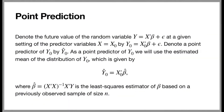Denote the future value of the random variable y — y being given by x prime beta plus epsilon — at a given setting of the predicted variables x equal to x sub 0, by y sub 0 equal to x sub 0 prime times beta plus epsilon. As a point predictor of y sub 0, we'll use the estimated mean of the distribution of y sub 0, which is given by y hat sub 0 equal to x 0 prime times beta hat, where beta hat is equal to the inverse of x prime x times x prime y. This is the least squares estimator of beta based on a previously observed sample of size n.